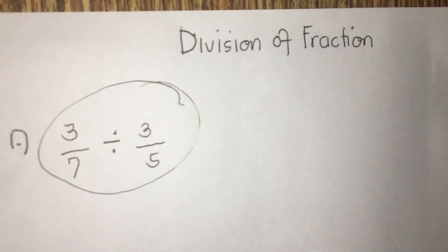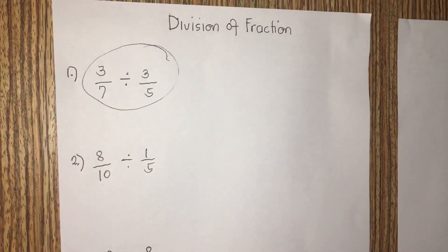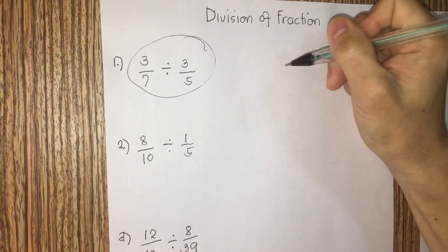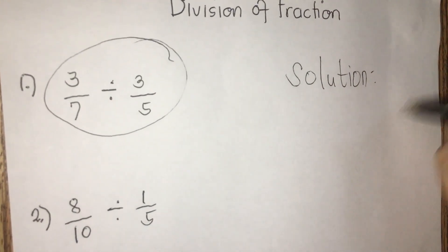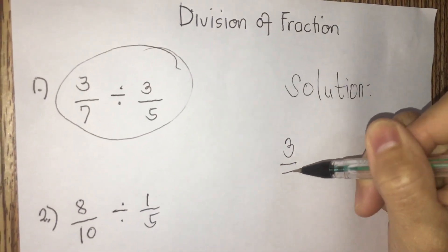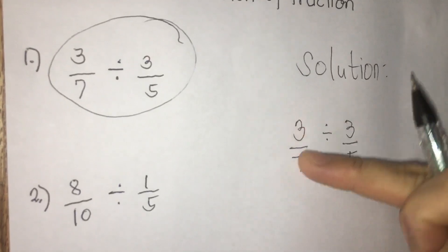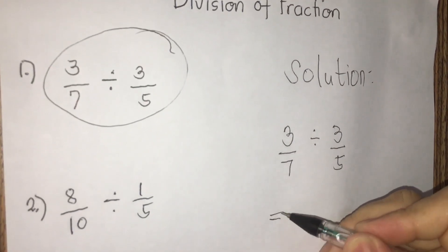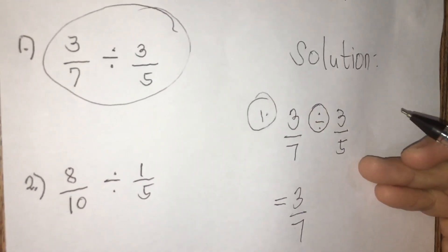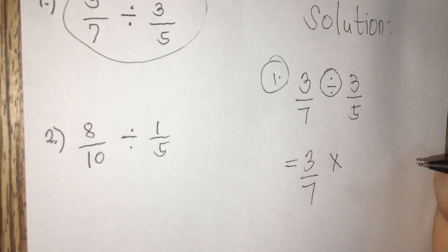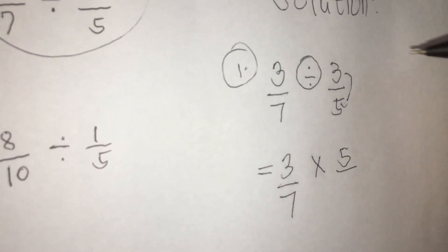How can I solve that? Remember division of fractions. Here we go — please watch. First, we are going to write the solution. So I'm going to write 3/7 divided by 3/5. This is how we read the fraction. For number one, I'm going to write 3/7, and next we change the division symbol to a multiplication symbol. Then for 3/5, we are going to reverse it — denominator becomes numerator and numerator becomes denominator.